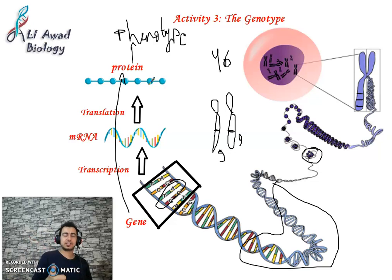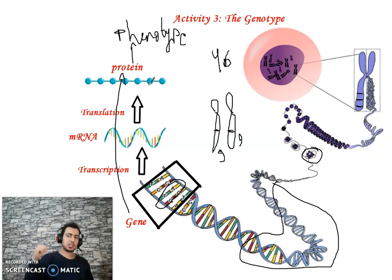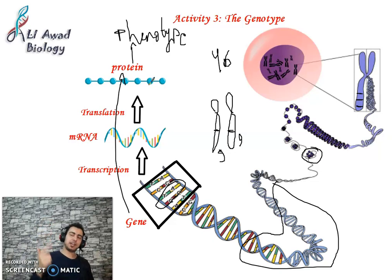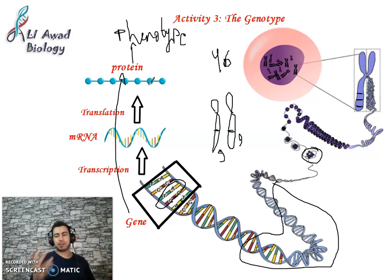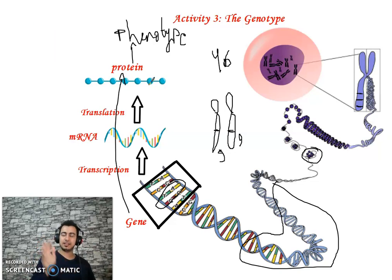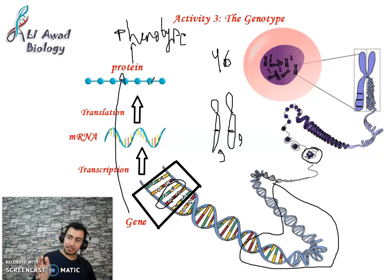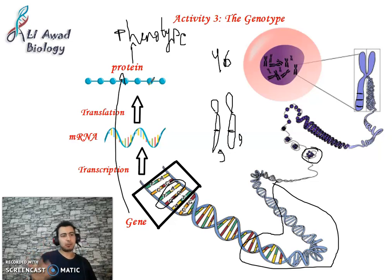We saw that Duchenne muscular dystrophy is due to an abnormal dystrophin protein, i.e., due to an abnormal gene. Abnormal hemoglobin causes sickle cell anemia. Albinism is due to abnormal or absent melanin.